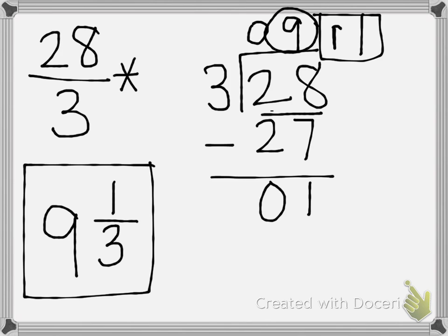Let's go over the steps one last time. Step 1: divide the numerator by the denominator. Step 2: write the quotient as the whole number. Step 3: write the remainder as the numerator. Step 4: keep the denominator the same as the original denominator in the fraction greater than 1. That was your lesson on how to write fractions greater than 1 as mixed numbers.